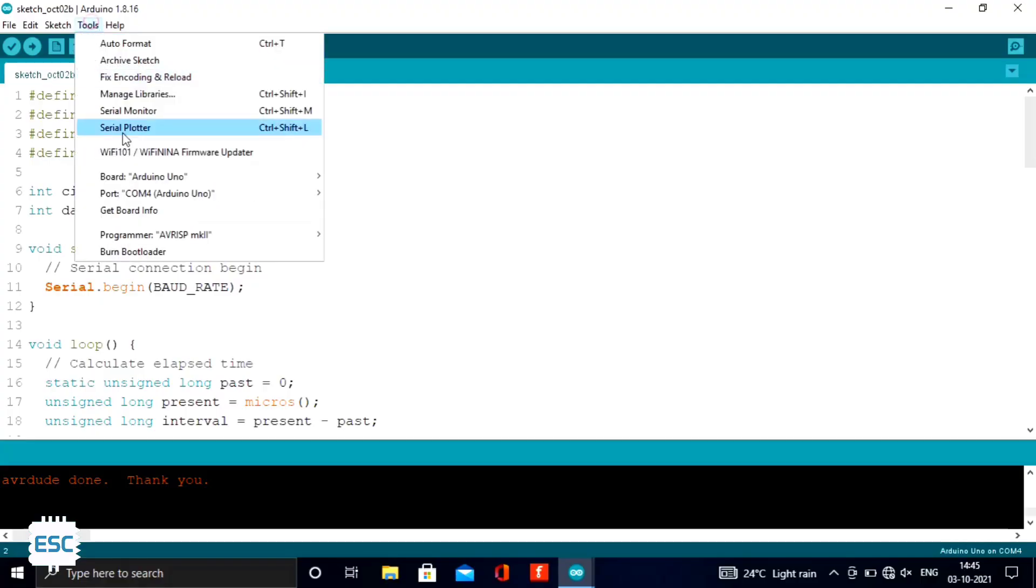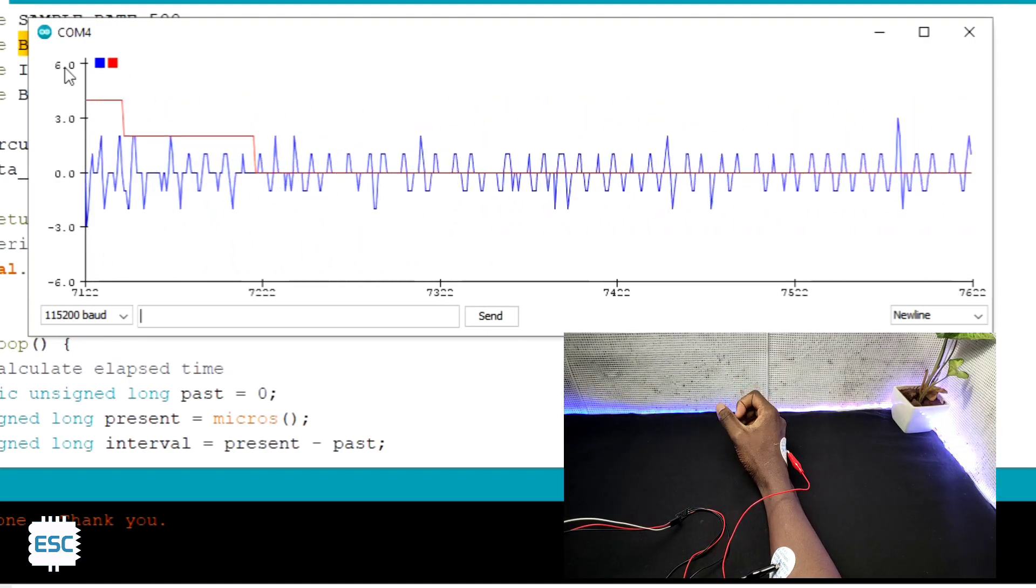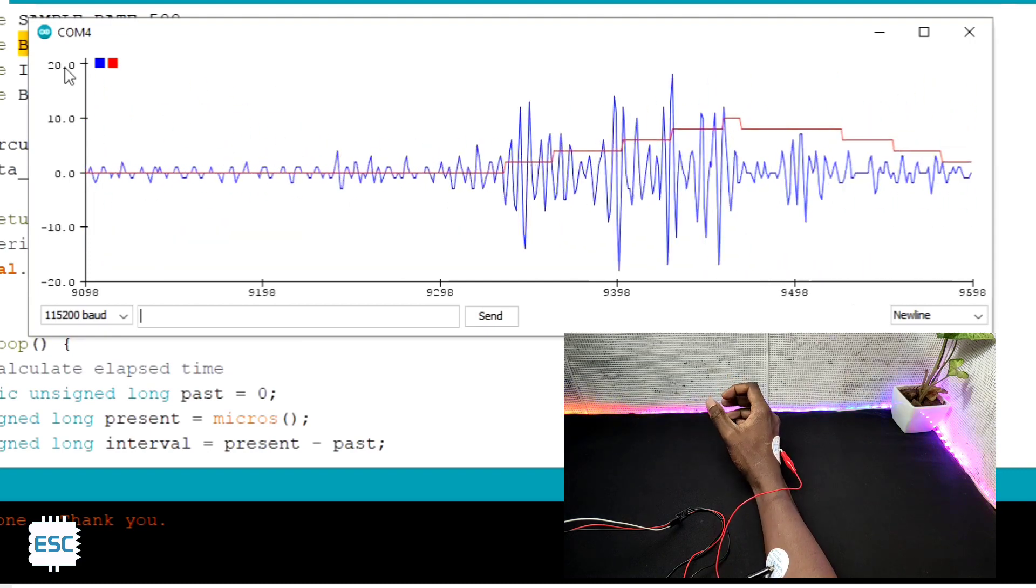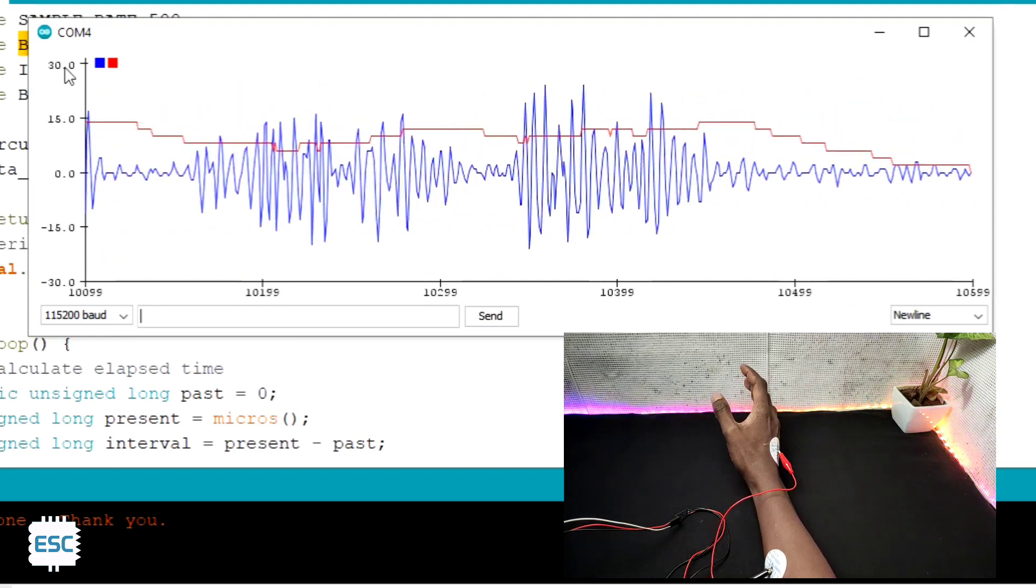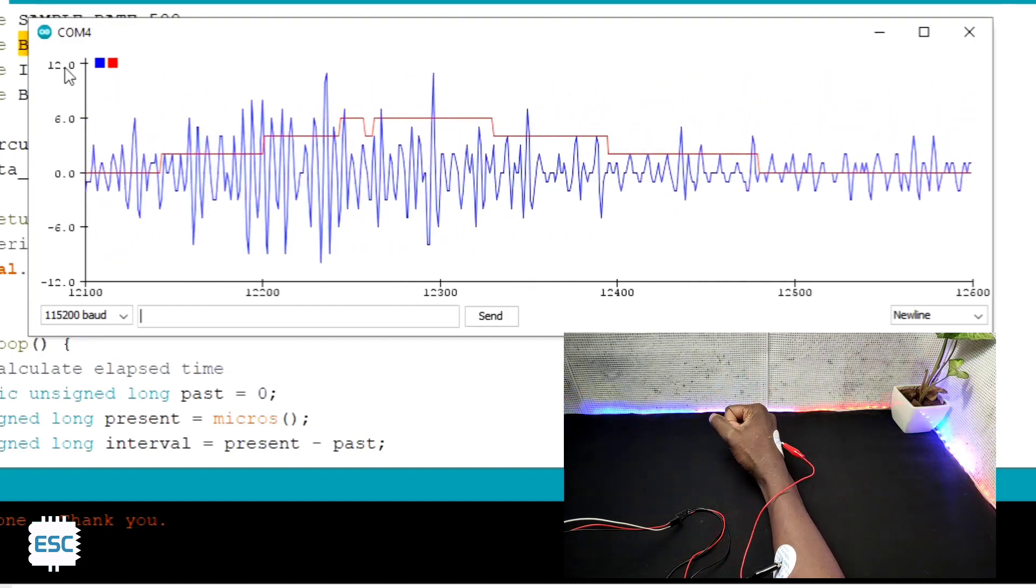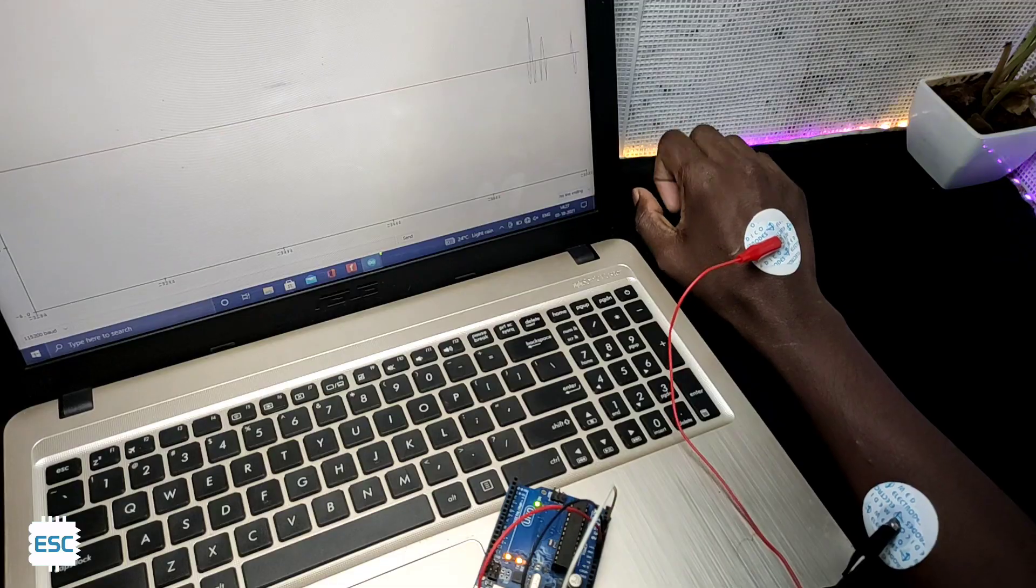After that, I uploaded the sample code to Arduino and opened the serial plotter. Here you can see the graph. Yeah, this is my EMG. You can see the variation according to my hand movement. Magic! Perfect.